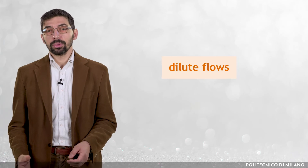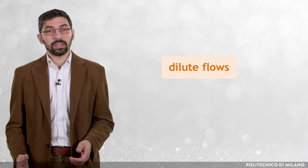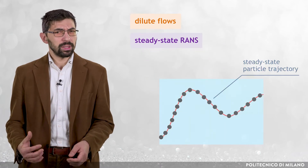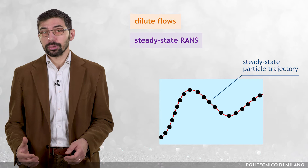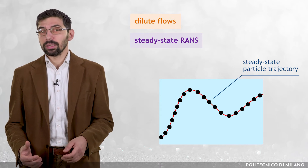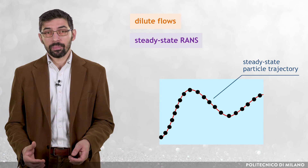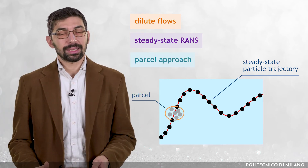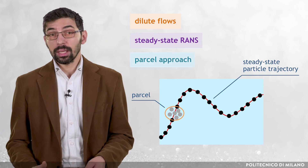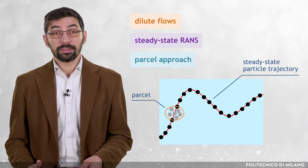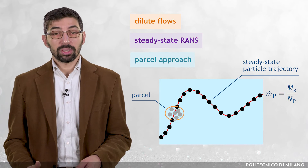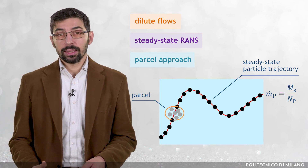Given the need to keep the computational cost affordable, it is not surprising that most erosion predictions are performed using steady-state, RANS-based Eulerian-Lagrangian models. Conceptually, it looks strange to attribute a steady-state nature to the Lagrangian particle trajectories. This basically means that the Lagrangian time used to integrate the particle equation of motion does not correspond to the physical time. Following the parcel approach, in which a single trajectory represents a group of neighboring particles, a steady-state trajectory is associated with a certain mass flow rate, dot M_P, which is the ratio between the total solid mass flow rate, dot M_S, and the number of calculated parcels, N_P.